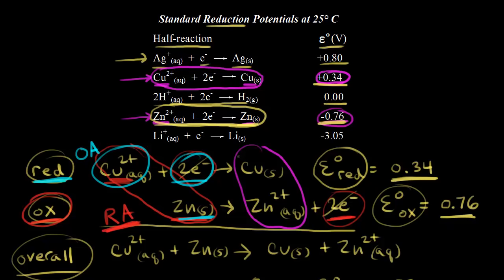Looking at the standard reduction potential table, we can understand oxidizing agents and reducing agents more clearly. Comparing copper two plus ions to zinc two plus ions: copper two plus has the more positive value for the standard reduction potential, so it's more easily reduced, and therefore copper two plus is a stronger oxidizing agent than zinc two plus. As you go up on your standard reduction potential table, you're increasing the tendency for something to be reduced, and therefore increasing the strength as an oxidizing agent. So moving up on the table means increased strength as an oxidizing agent.